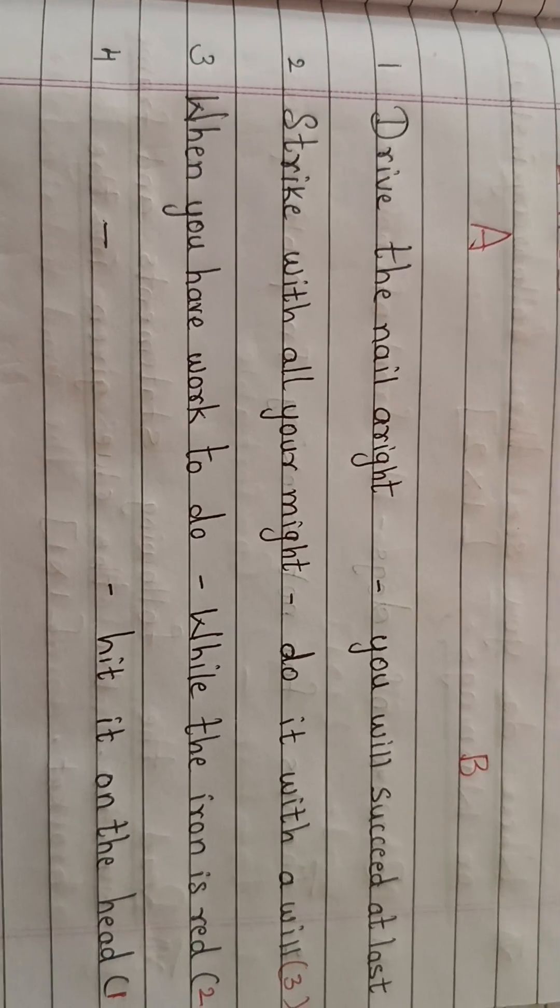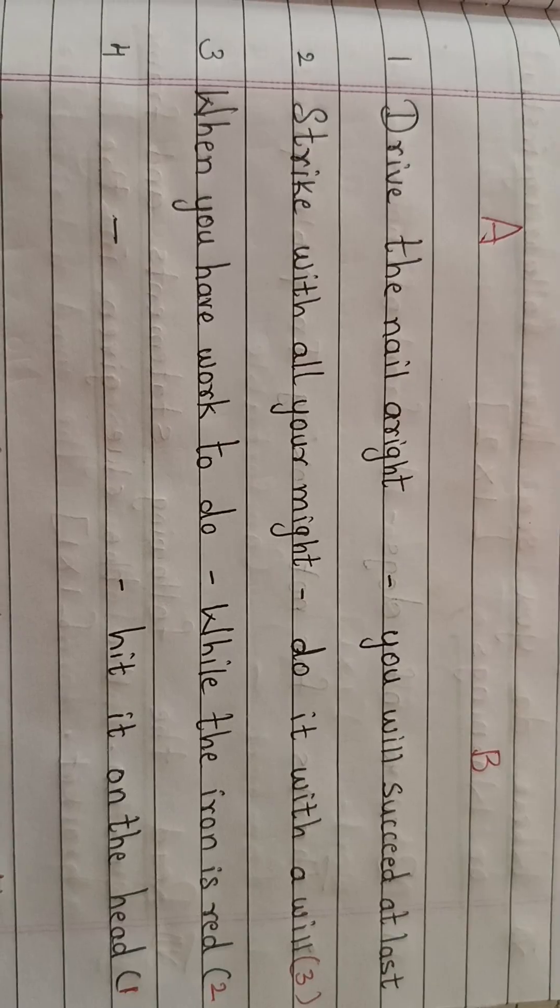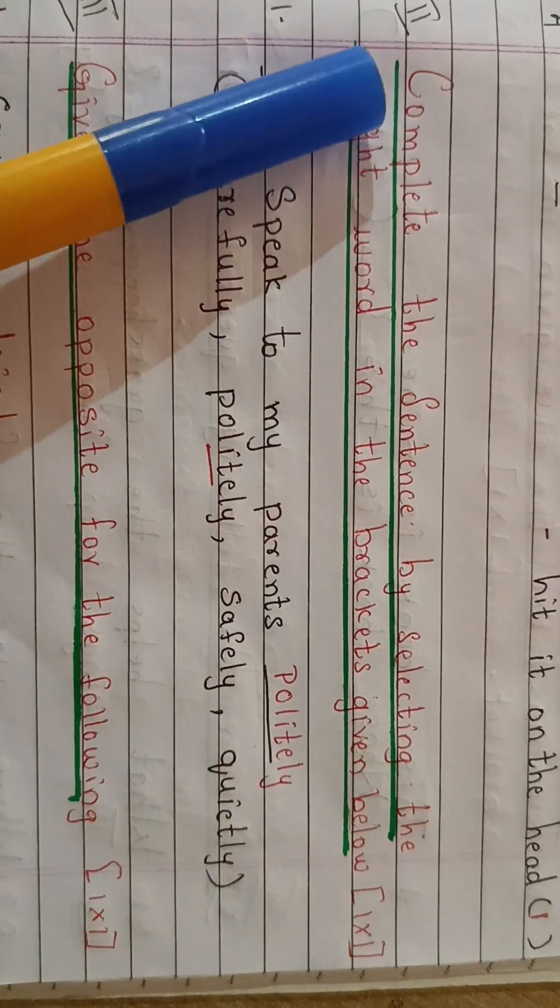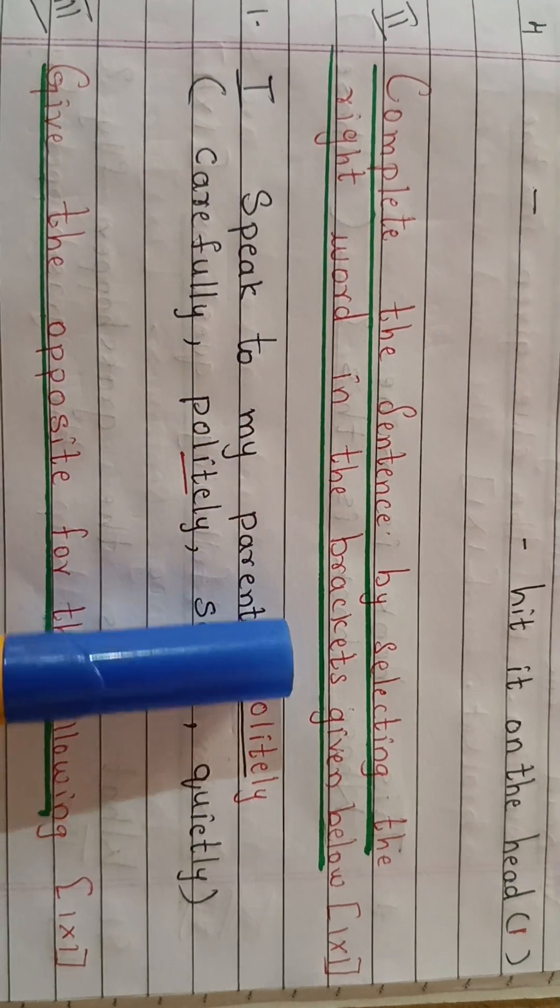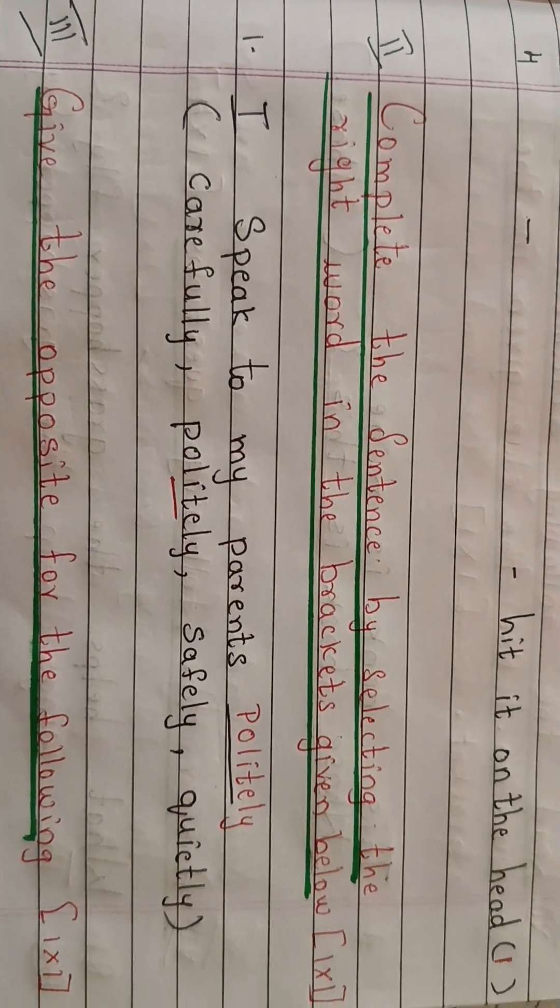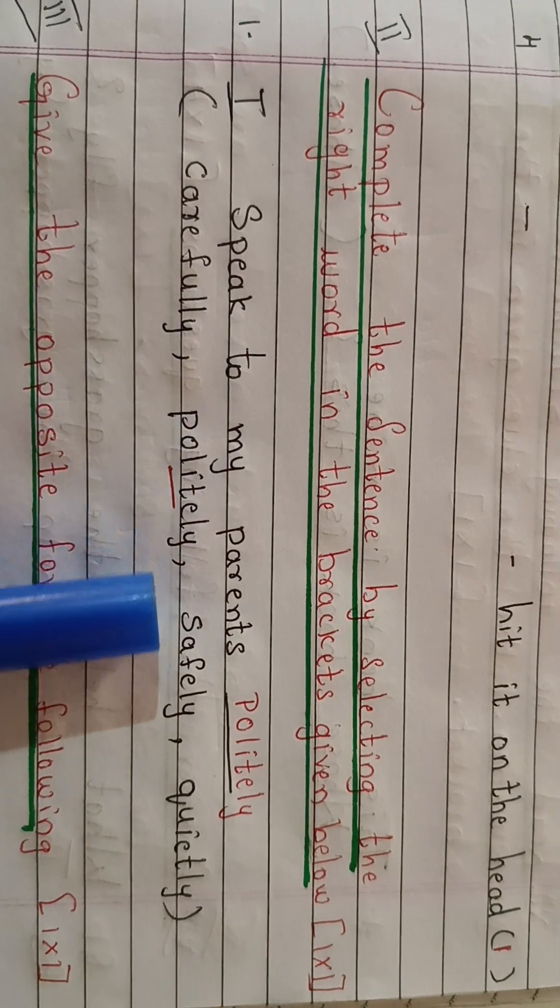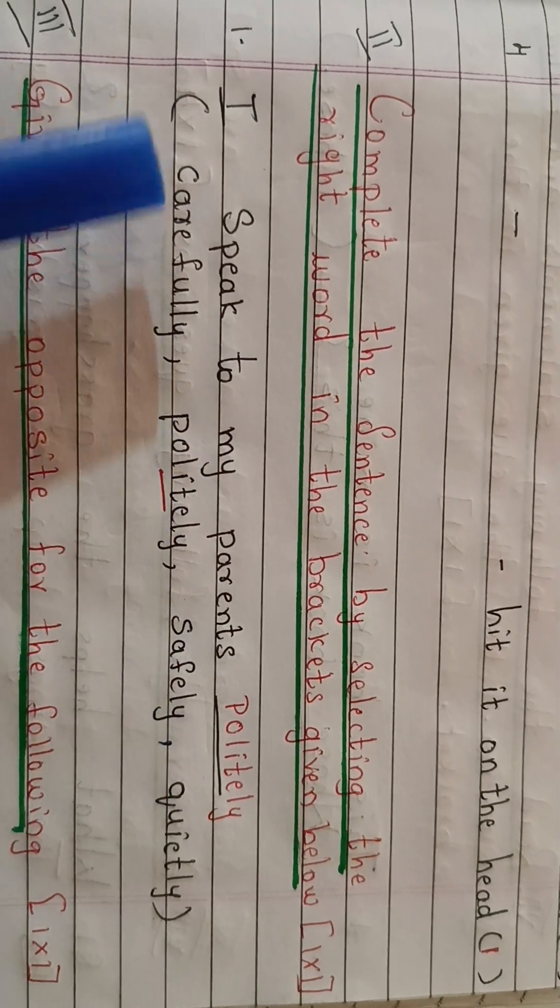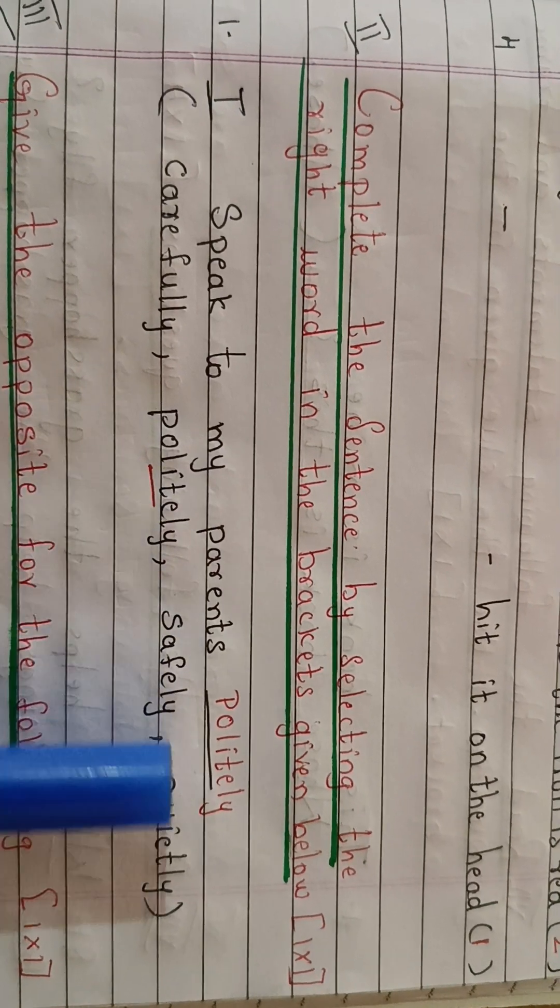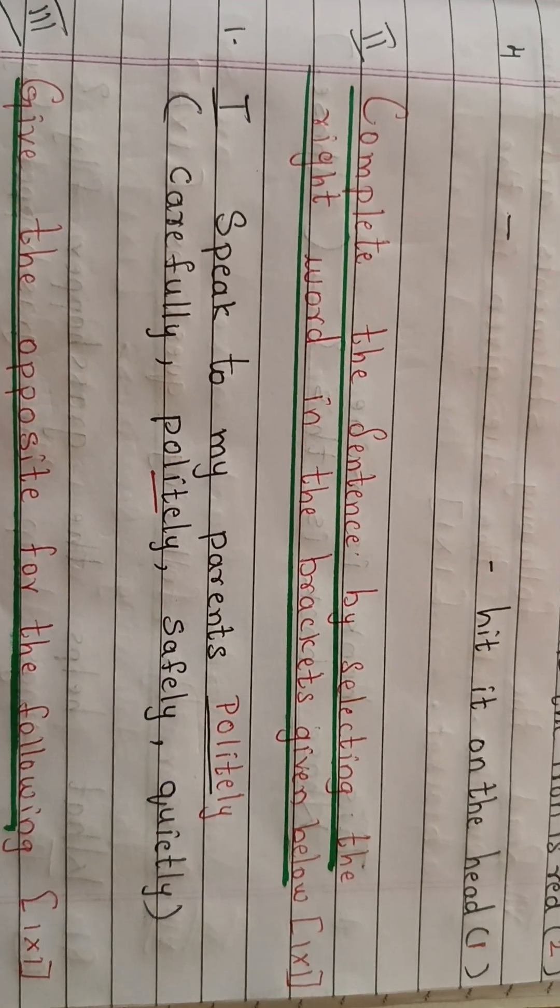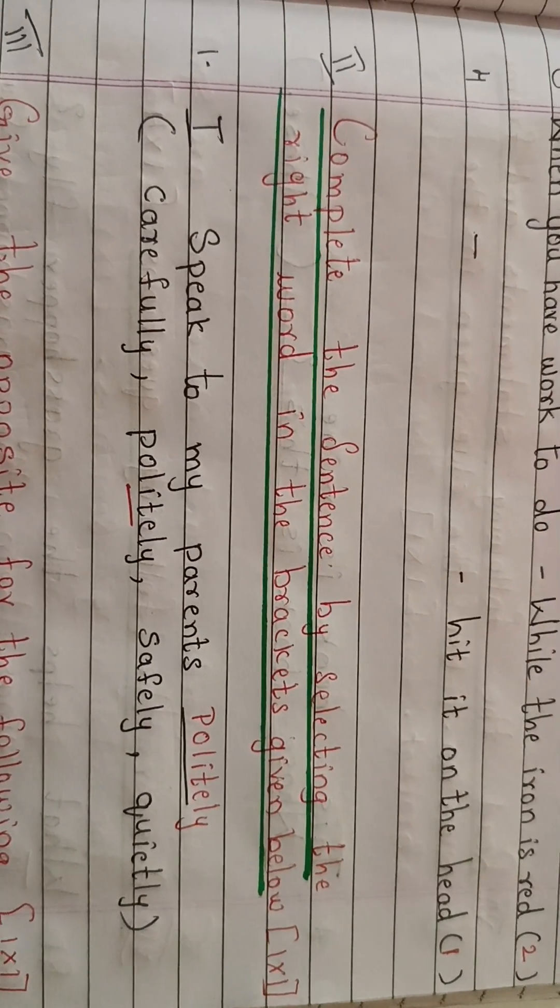Let's move to the second one now. Complete the sentence by selecting the right word in the bracket given below. So this carries one mark. I speak to my parents dash. So you can find the options here. The child has to select the correct option and fill in the blanks. I speak to my parents politely. So this is one mark question.